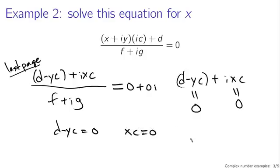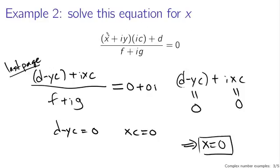So we effectively have two equations: d minus yc equals zero, and xc equals zero. Which, unless c equals zero, just means x equals zero. That's the only way this equation can hold — x equals zero. The key fact here is that in order for two complex numbers to be equal, both the real parts and the imaginary parts must be equal.